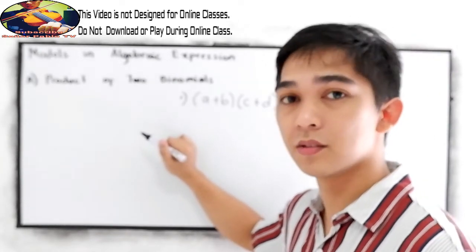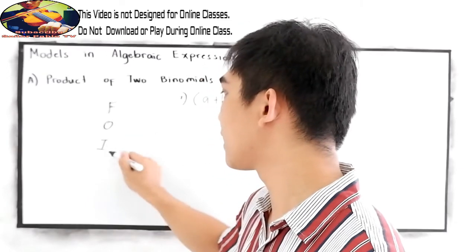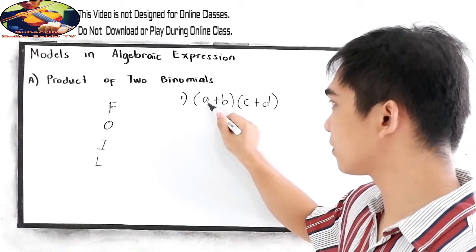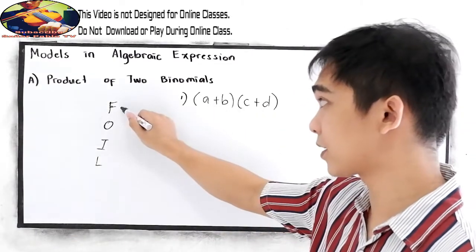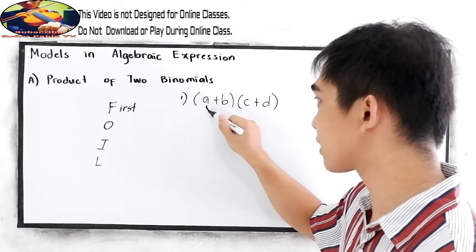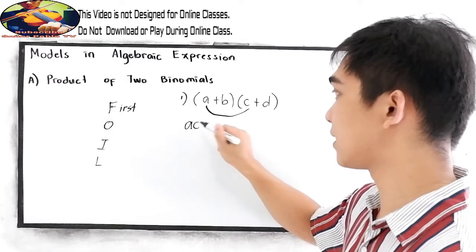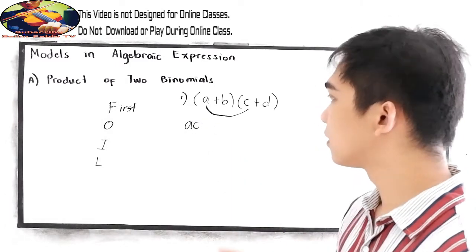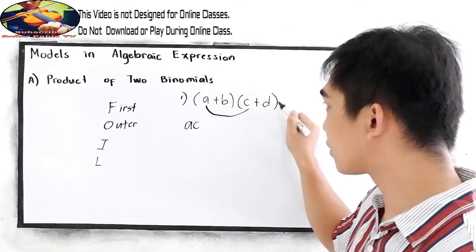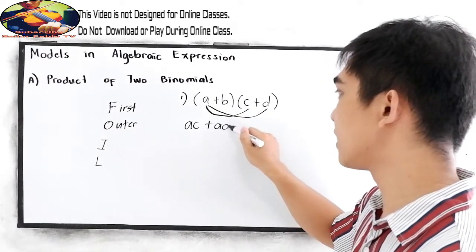We are going to use the FOIL method — F, O, I, L. First, multiply the First terms: a times c gives us ac. Next, the Outer terms: a times d gives us plus ad.